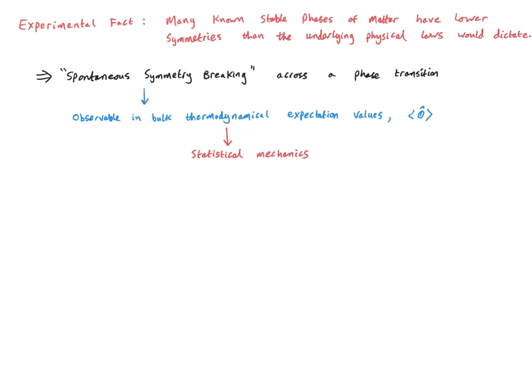So let's look at the mechanism for spontaneous symmetry breaking from the perspective of statistical mechanics. We'll see that the usual arguments underpinning statistical mechanics can actually break down across a phase transition. The thermal expectation value of O-hat is (1/Z) times the sum over eigenstate j of the matrix element of O-hat sandwiched between bra psi_j and ket psi_j, multiplied by the Boltzmann weight e to the minus beta E_j. Beta is the inverse temperature 1/(k_B T), and E_j is the energy of eigenstate psi_j. Since the eigenstates and energies are determined by the Hamiltonian, it would seem that expectation values inherit the symmetry properties of the Hamiltonian.